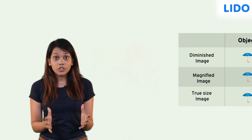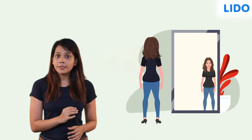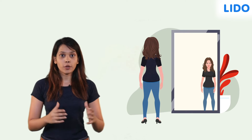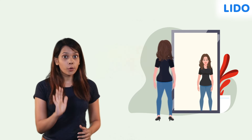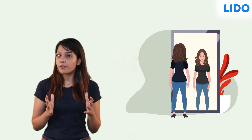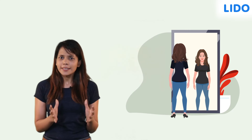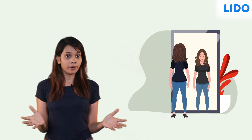The reflection in the plane mirror appears to be of the same size as the object. Moving closer to the mirror will make the reflected image appear larger, just like looking at the real object would.